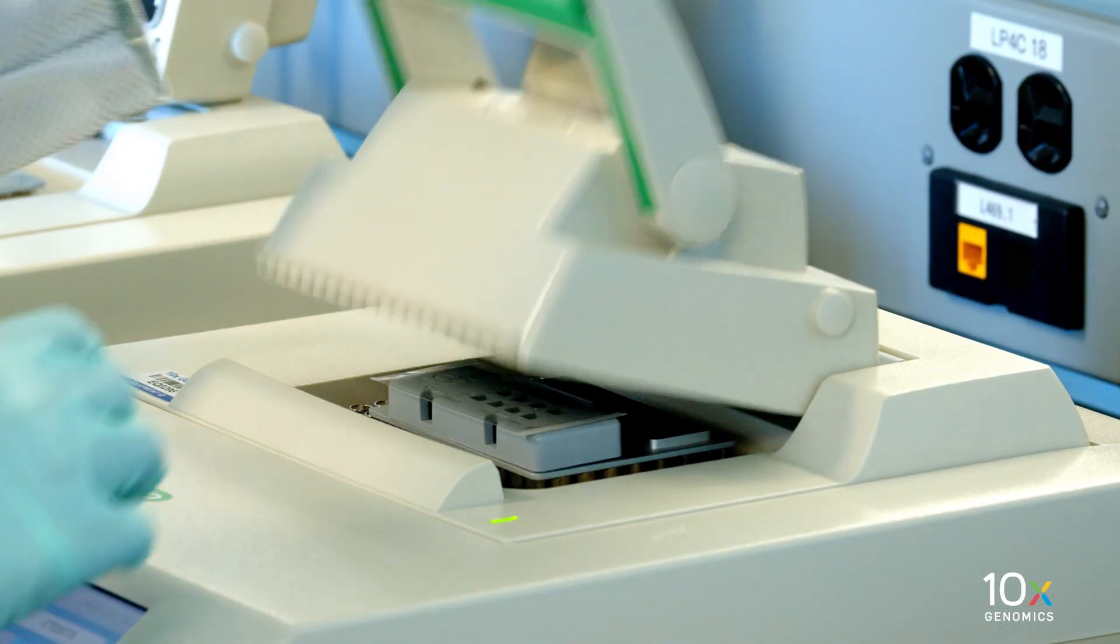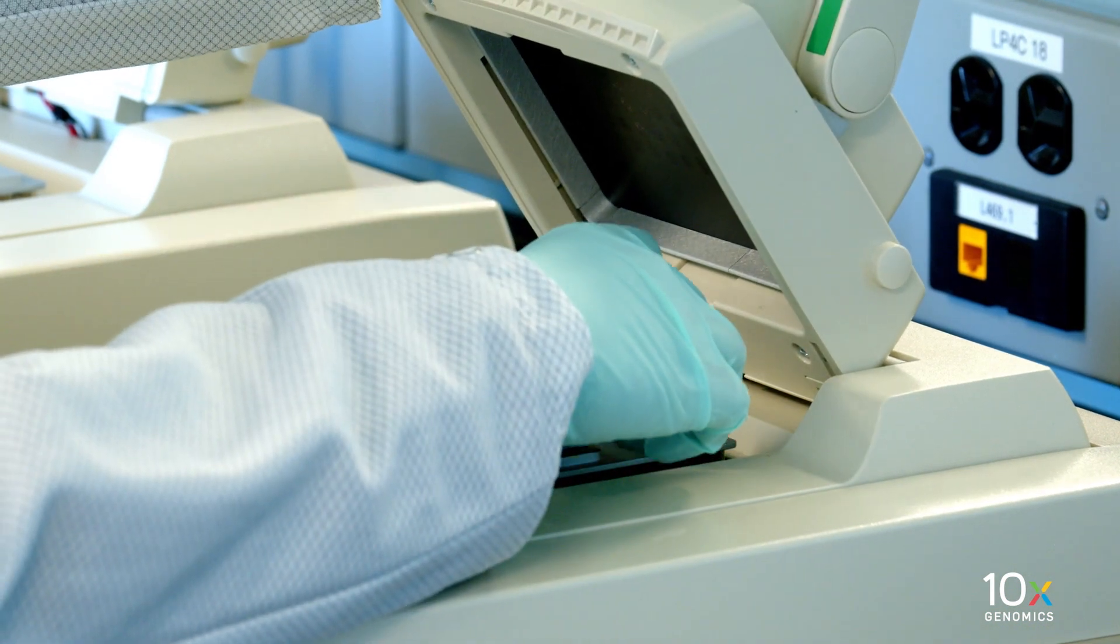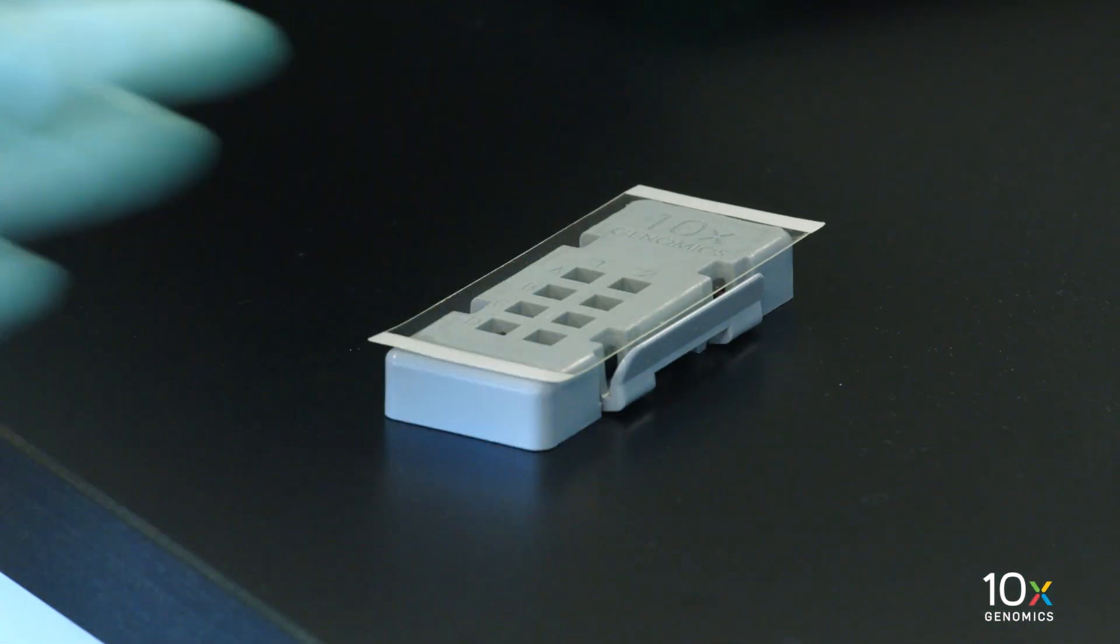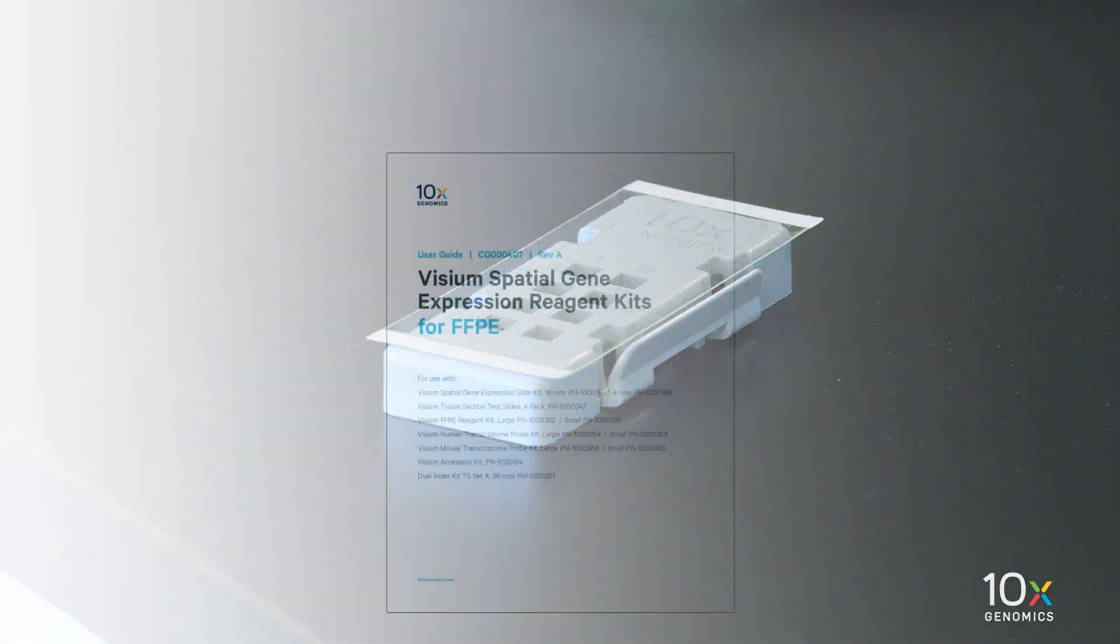Once the decrosslinking is complete, remove the cassette from the thermocycler adapter and place on a flat clean work surface. Proceed immediately to the Visium spatial gene expression for FFPE user guide.